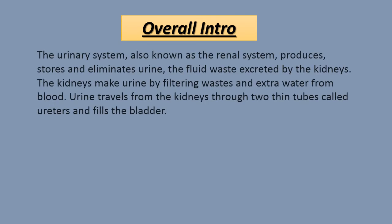To recap the introduction to our urinary system: the urinary system is also known as the renal system. It produces, stores, and eliminates urine. It excretes waste products as urine — the fluid waste excreted by the kidneys. The kidneys make urine by filtering waste and extra water from the blood. Urine then travels from the kidneys through two thin tubes called ureters and fills the bladder, as seen in the previous diagram.